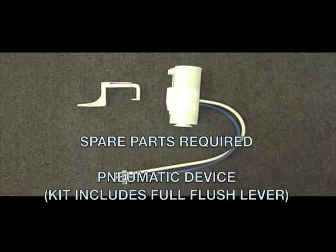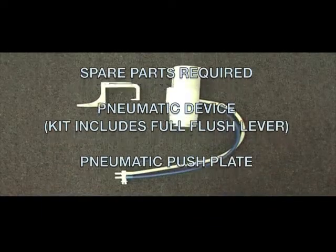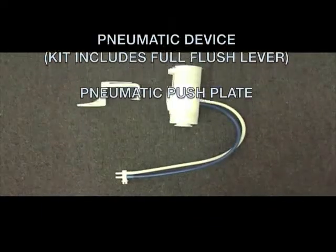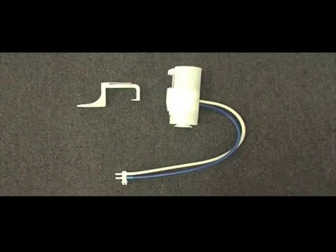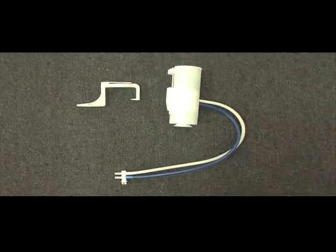To perform a mechanical to pneumatic conversion on a hideaway, you will need to order a pneumatic device. With this you will receive the full flush lever, and you will need to order your pneumatic buttons.